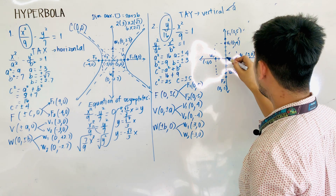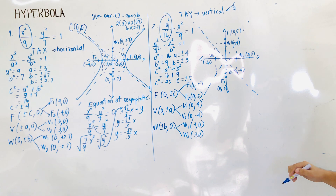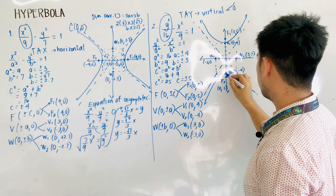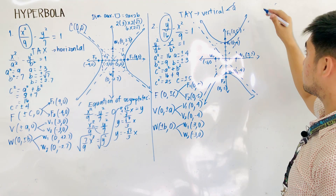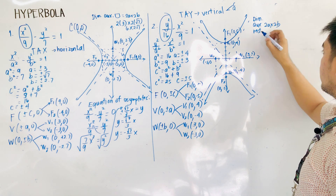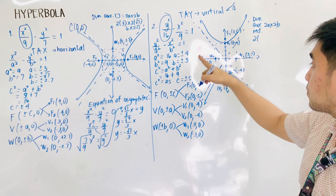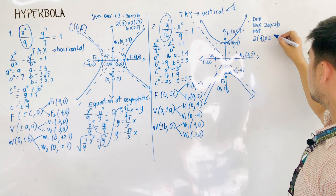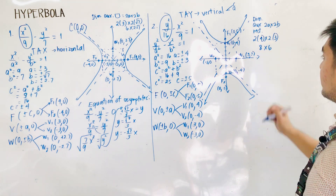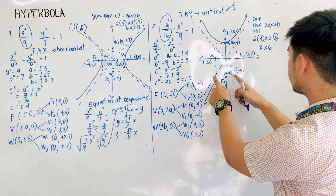Our hyperbola now opens up and down. The dimension of the auxiliary rectangle is 2a by 2b — that is 2 times 4 by 2 times 3, which gives us 8 by 6. So the rectangle is 8 units tall and 6 units wide.